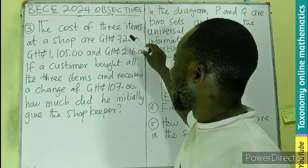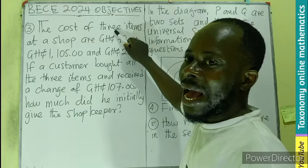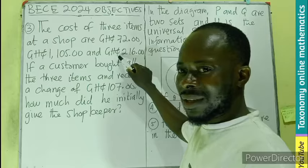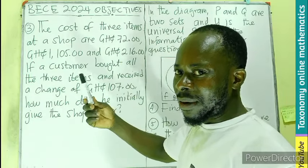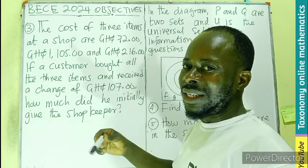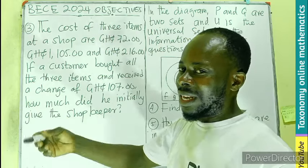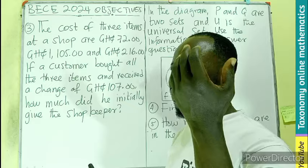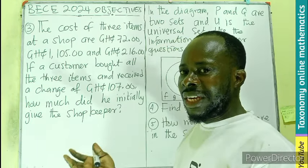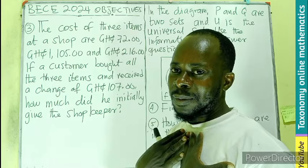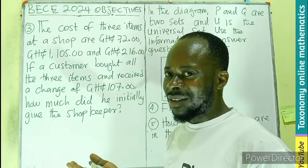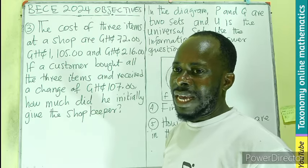This is about knowing the total cost of the three items. You pay this together with this together with this - that is adding them together. Then if you have a change of 107, how much did you present? Just have this scenario: the amount that you are paying for the article plus the change that you were given will give you the money you have. You get that concept?